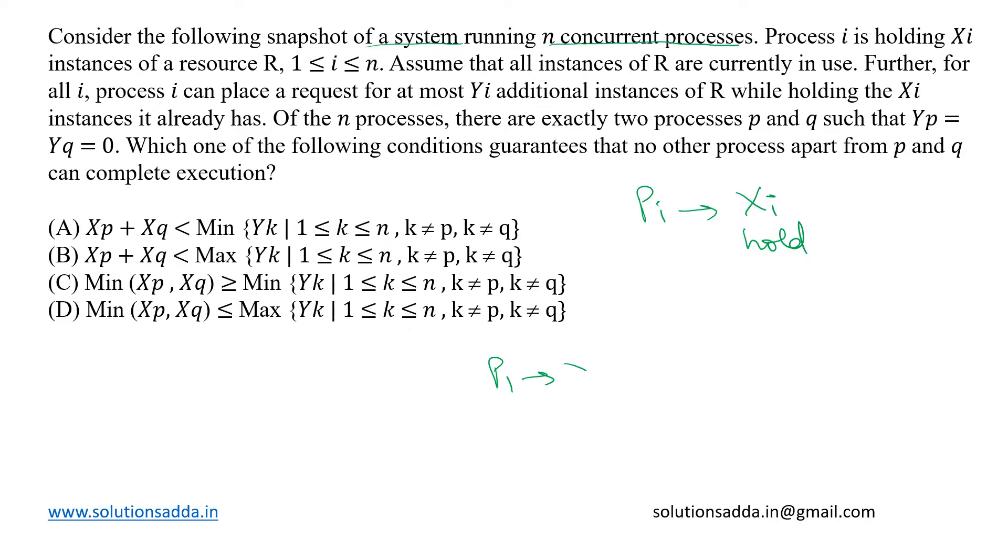This means P1 will hold X1 resources, P2 will hold X2 instances and so on up to PN holding XN instances of the same resource R. But they have given that there are no additional instances of R left, but each process PI can additionally request YI instances for its execution.